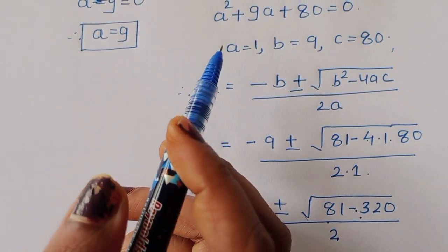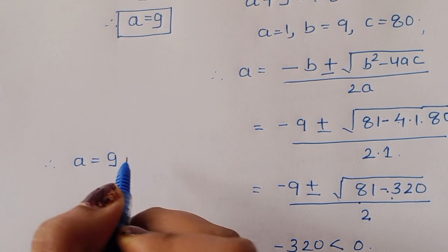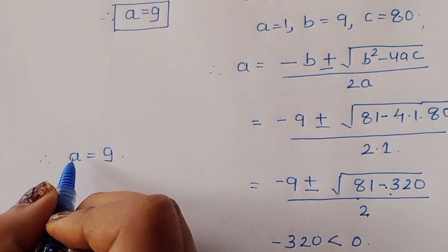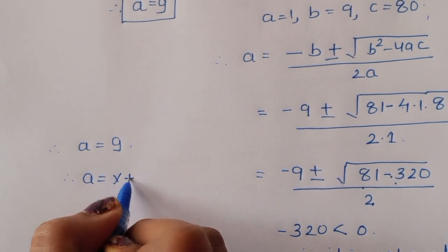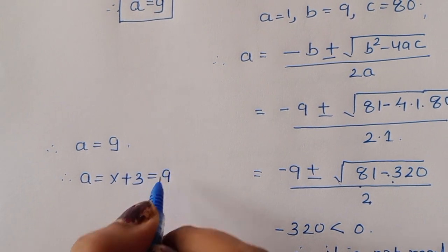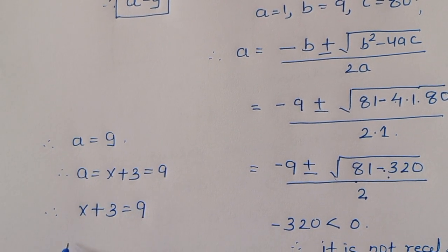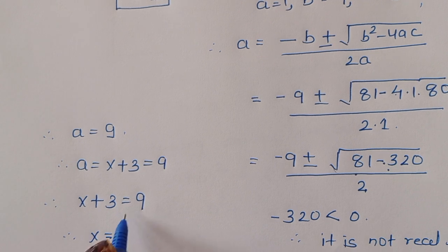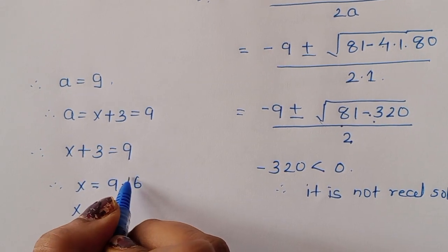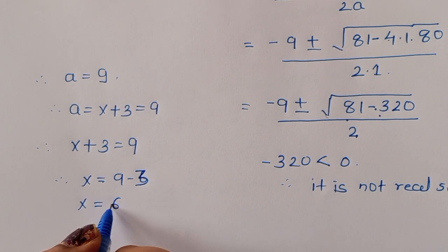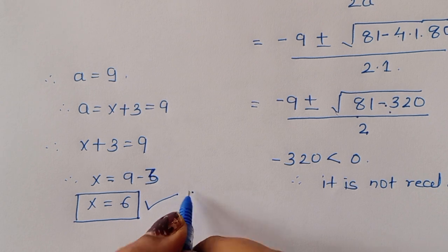We have a = 9. Since we defined a = x+3, we write x+3 = 9, therefore x = 9 - 3 = 6. The value of x is 6.